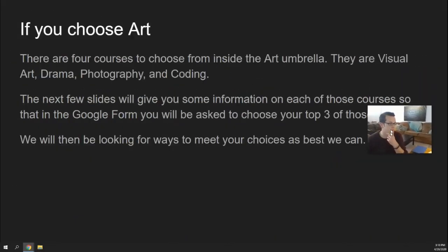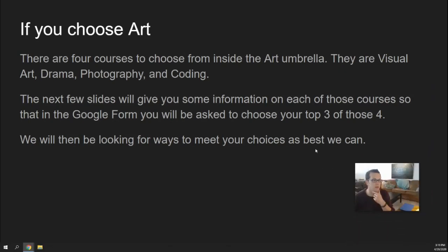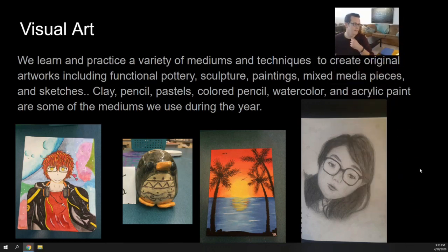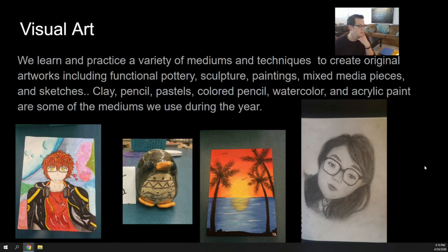If you choose art, there are four choices. We would like you to choose your top three, and then we're going to be looking for ways to meet your choices as best we can. Visual art — this is some of the stuff that you would be doing in visual art. No matter what you pick in grade 7, there will be elements that you need to practice, because all of these arts require skills, and skills you just have to practice. Miss Massey sometimes has people learning how to draw circles, lines, straight lines, and has daily homework for you to practice drawing.